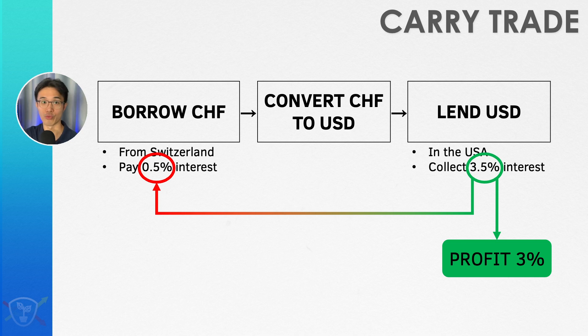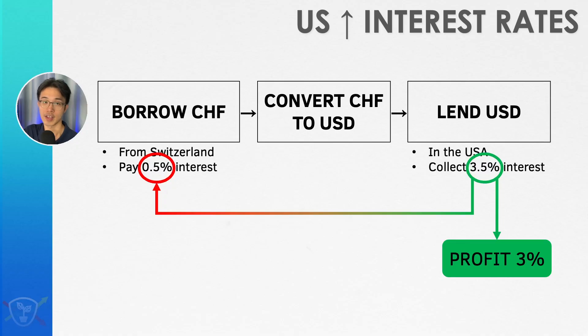So is this the secret to risk-free passive income? Just borrow money at low interest, lend it at high interest, and net the difference in interest rates? Well, no, this isn't some secret trade. Actually, everybody knows about this strategy because it sounds pretty obvious. Everyone who sees this is going to borrow Swiss francs to sell in exchange for US dollars and then deposit or lend those US dollars to earn a higher interest.